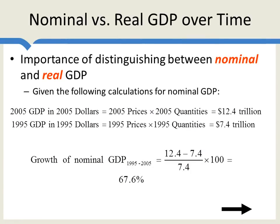Okay, given this, how do we compare GDP of two different countries? Well, we're going to use a method very similar to what we do to compare GDP over time in the same country. So let's remember what nominal GDP is. Nominal GDP is just the market value of all final goods and services sold in a country within a year. So, for example, if we look at nominal GDP in the United States in 2005, that's 2005 prices times 2005 quantities, which equals $12.4 trillion. If we look at 1995 GDP in the United States, that's 1995 prices times 1995 quantities — $7.4 trillion. The growth of nominal GDP, subtracting these numbers, turns out to be equal to 67.6%.